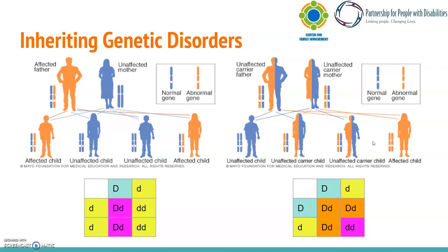Before continuing, I want to remind you that there is currently no way of choosing which allele is passed on — it is completely random. These examples perfectly follow the Punnett squares, but the outcome for one child does not affect the outcome of another child. In reality, it is totally possible for every child to have the genetic disorder, or for none of the children to have the genetic disorder.